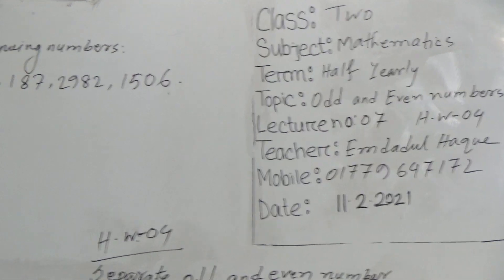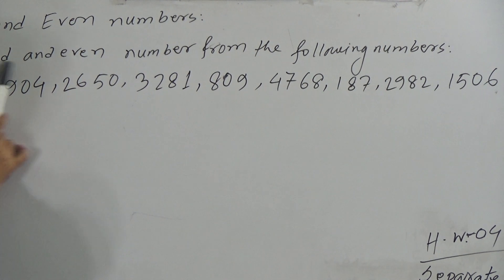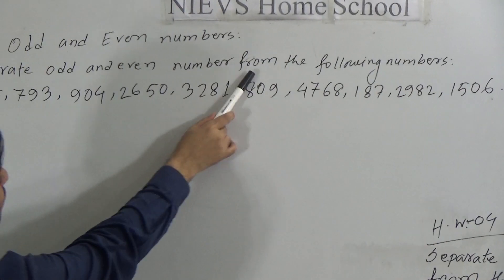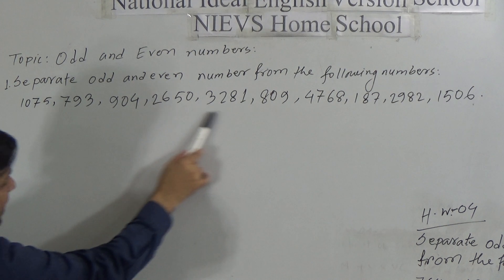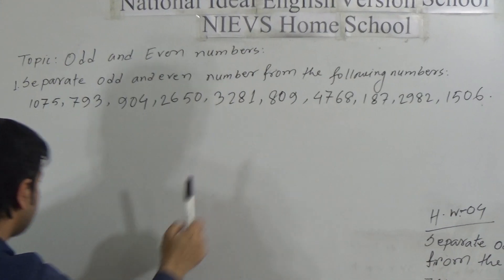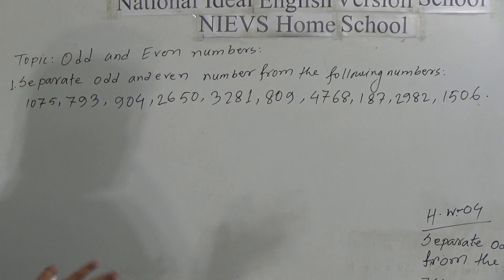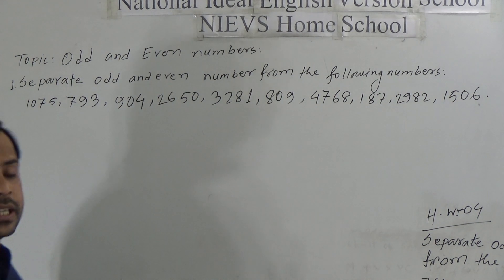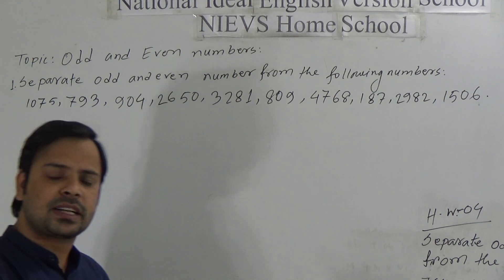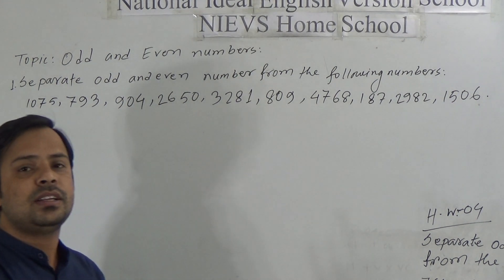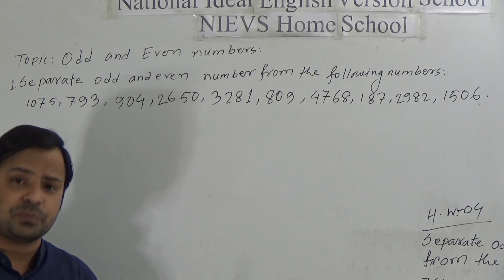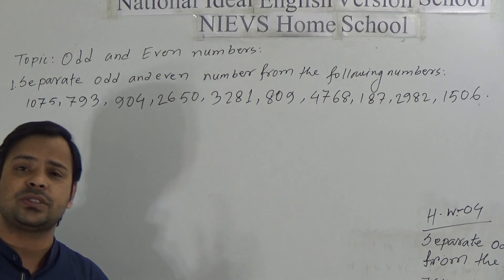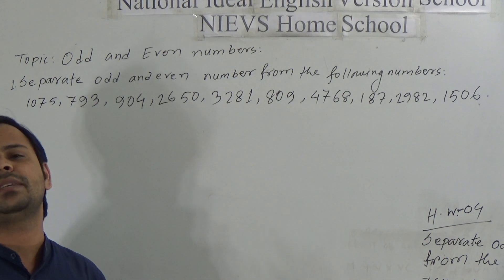Dear students, here I have written: separate odd and even numbers from the following numbers. It means some numbers are given here and we have to separate these numbers into two categories — first one is odd and second one is even. To do that, we first need to know what is an odd number and what is an even number.